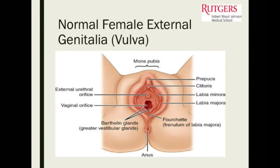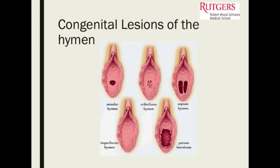I'm showing this diagram because it's important to know what normal is supposed to look like before you can figure out what's abnormal. Take a look at the introitus — this is the hymen area, and this is what normal should look like. You can have different lesions of the hymen that a patient can present with, and sometimes these are patients who present with cyclic pelvic pain with no period.